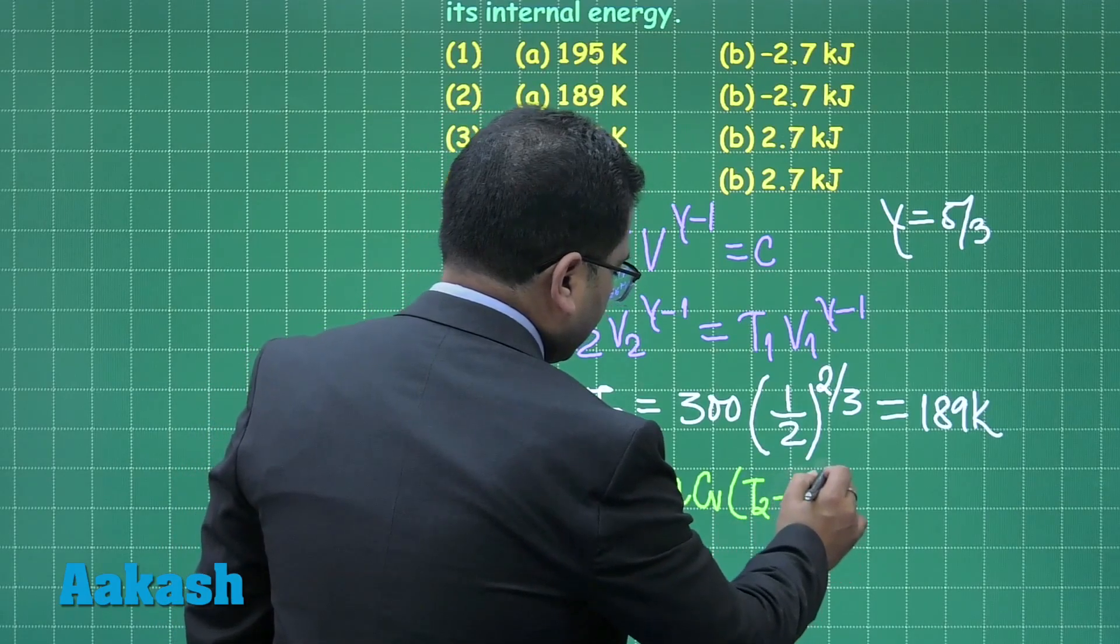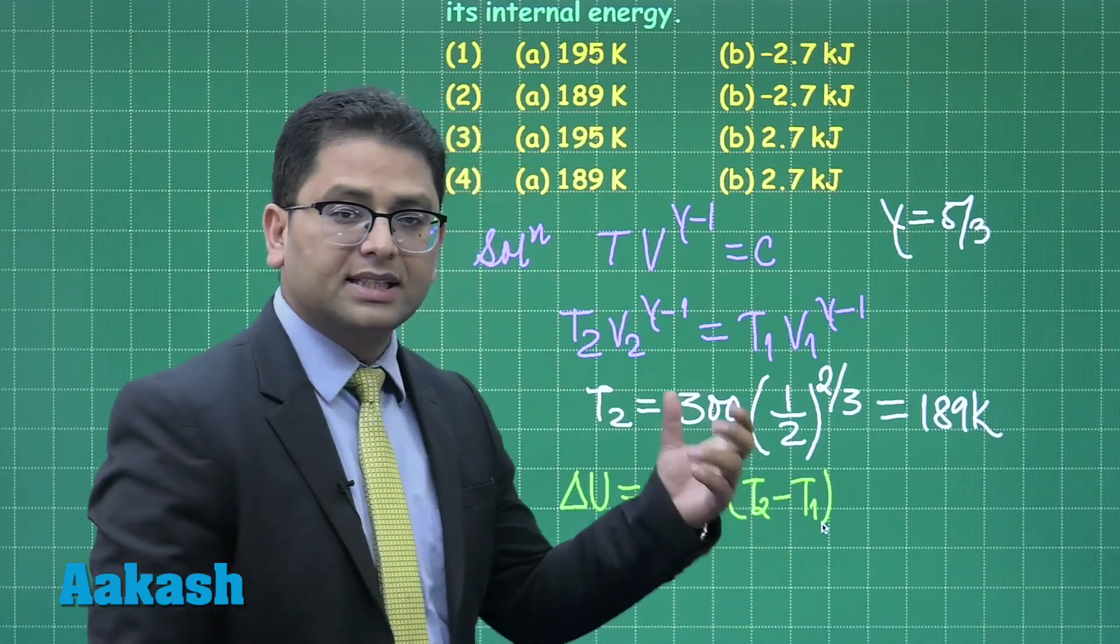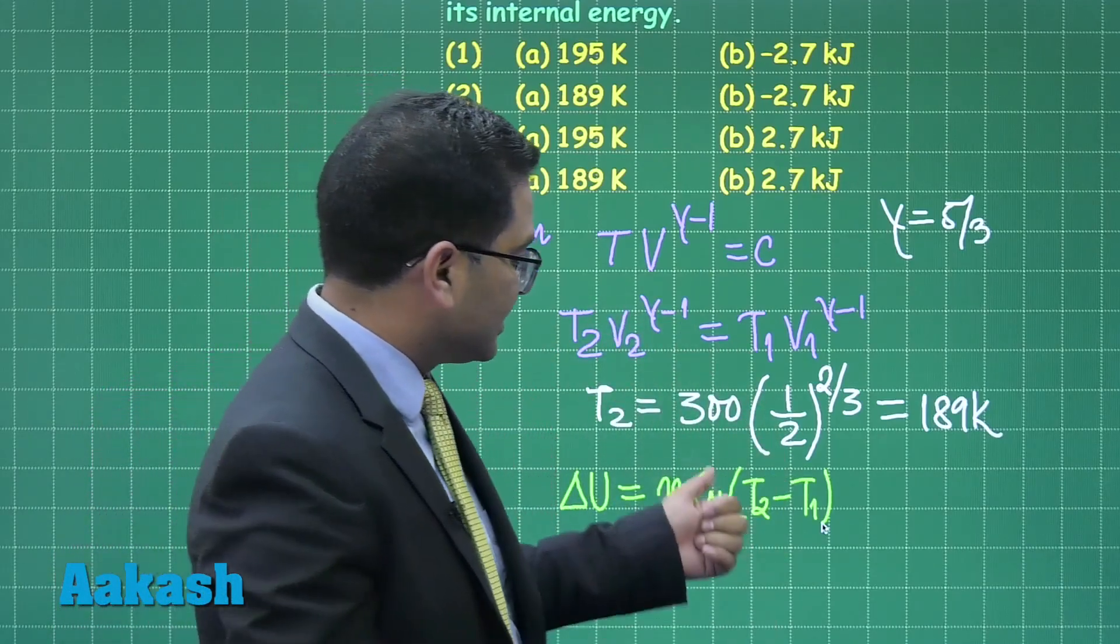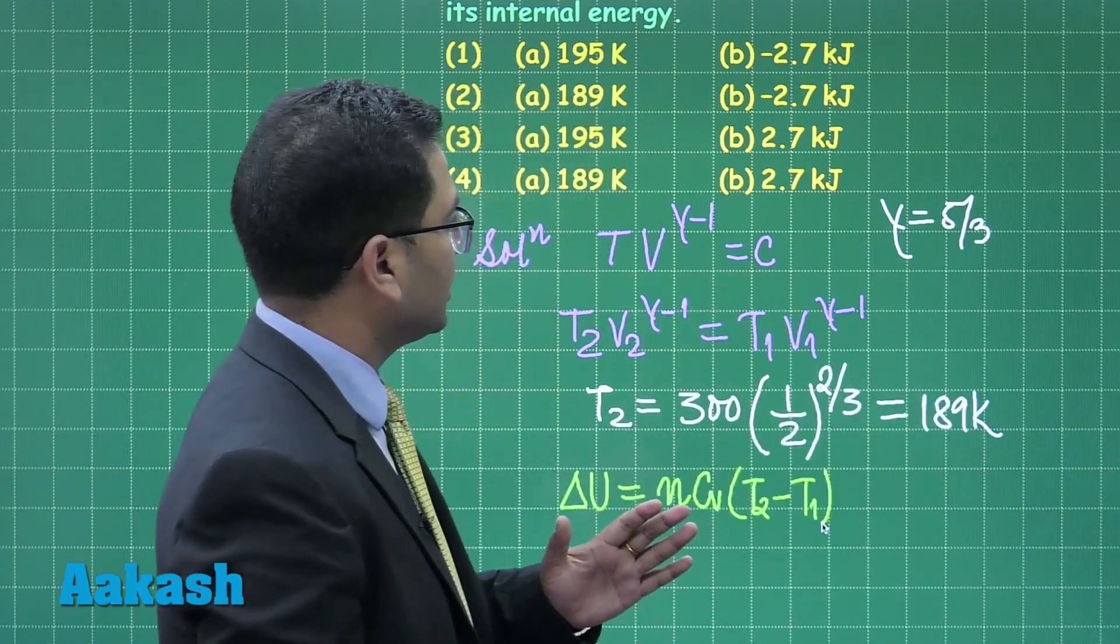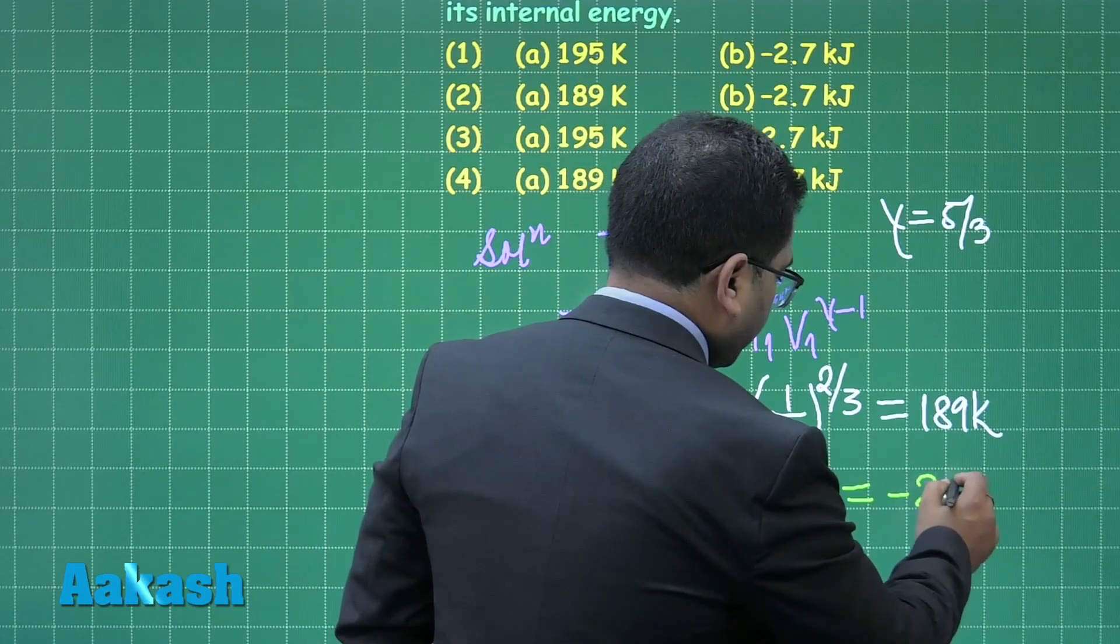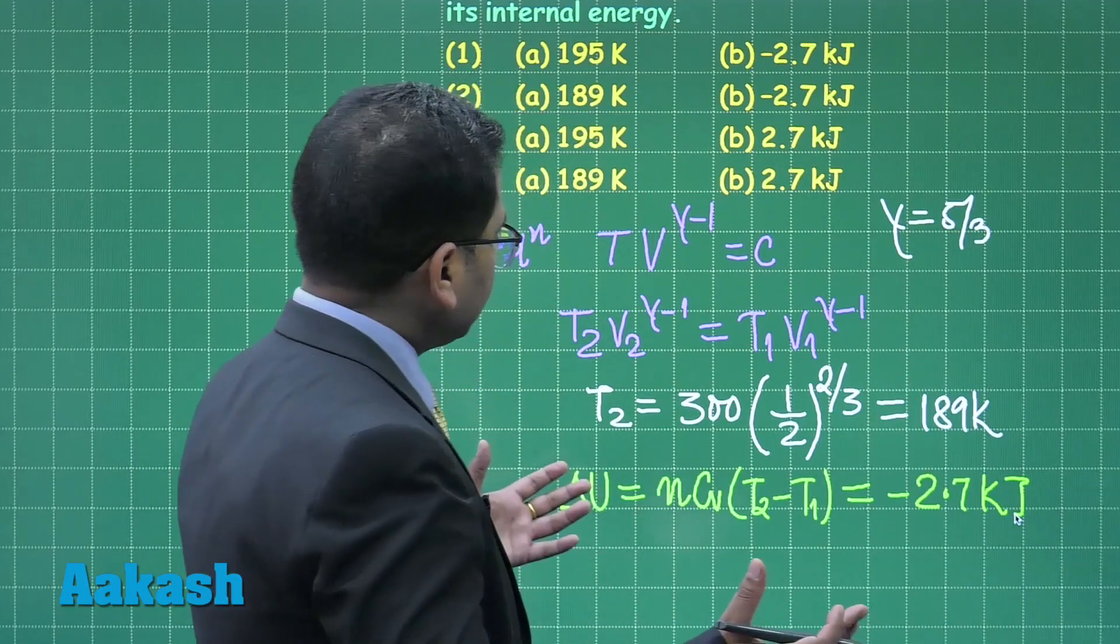So here is the direct value. You will put n as 2, C_v 3R by 2, right, it's monoatomic, and T_2 minus T_1, you can just put it, and the value is pre-calculated. This one is not so tough: minus 2.7 kilojoule would be the value.